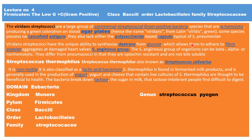Viridans streptococci have the unique ability to synthesize dextran from glucose, which allows them to adhere to fibrin platelet aggregates and damage heart valves — this is why some Viridans streptococci cause infective endocarditis. The Streptococcus sanguis group can be beta hemolytic, alpha hemolytic, or non-hemolytic, and they differ from pneumococci in that they are optochin resistant and not bile soluble.